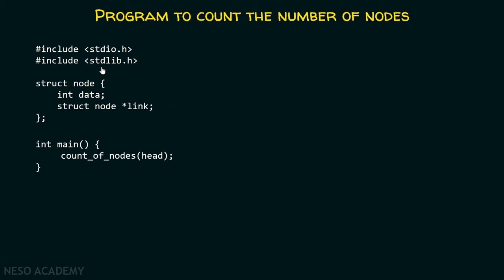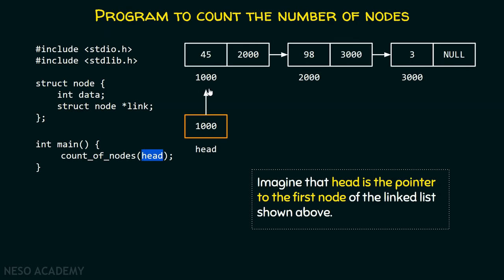For this purpose, I am writing this program. Here in this program, we should have these two header files, stdio.h and stdlib.h. We should have this struct node as well. Apart from this, there is a main function, which is the starting point of the program. Here, we are basically calling this countOfNodes function, which will count the number of nodes in the list. I am passing this head pointer — head is the pointer which is pointing to the first node of the list. We need to imagine that head is the pointer to the first node of the linked list shown here. We need to pass the head pointer of this list to this countOfNodes function, because with the help of the head pointer, we can actually reach every node of the list.